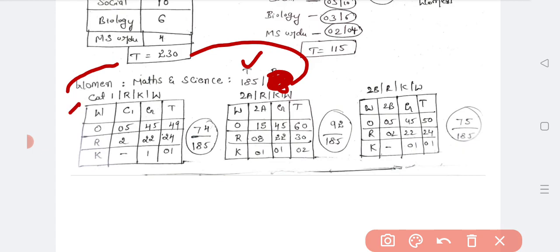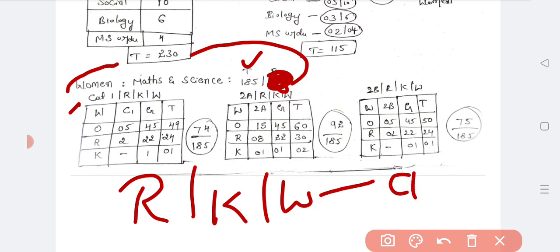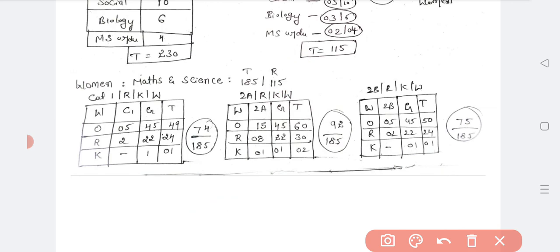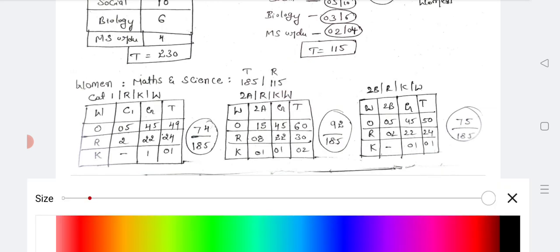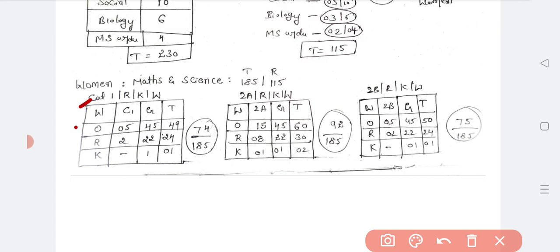Now we will see category-wise. I have to choose Category 1, 2A, 2B. In general, there is Category 1. So the first category is Category 1. So 2 plus 2, 22, 24. Kannada medium 1. So totally, 74 seats are reserved for Category 1 rural Kannada medium women out of 185.